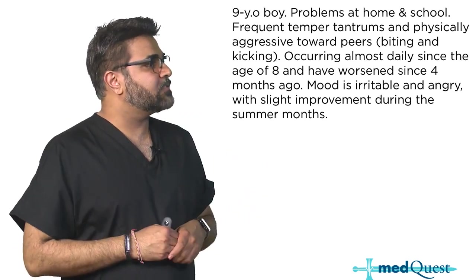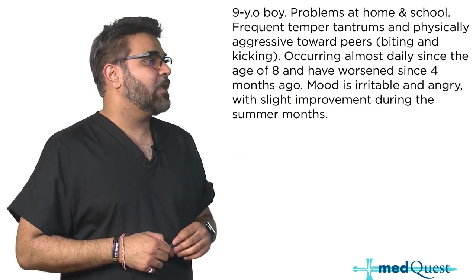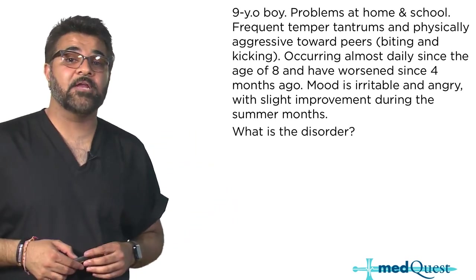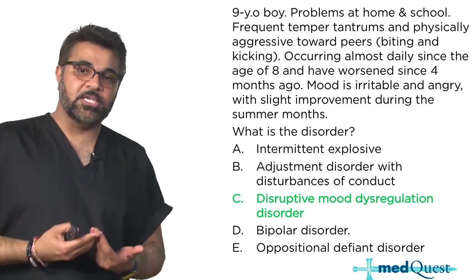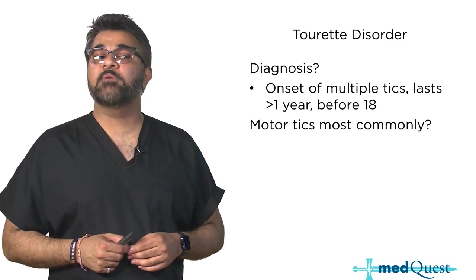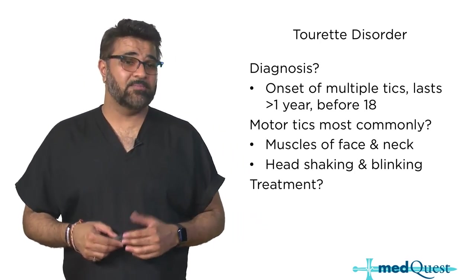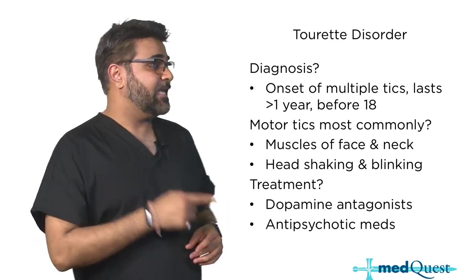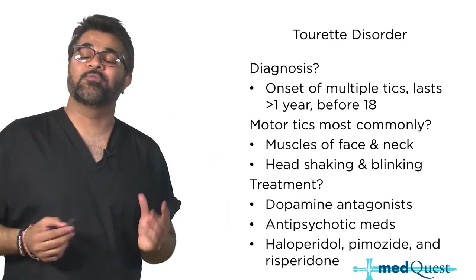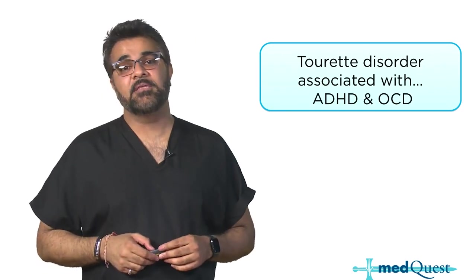A nine-year-old boy with problems at home and school, frequent temper tantrums, physically aggressive towards peers occurring almost daily since age eight, worsening since four months ago, with irritable and angry mood and slight improvements during summer months - this is a presentation of disruptive mood dysregulation disorder. For Tourette's disorder, the diagnosis is made with onset of multiple tics lasting more than a year before age 18. Motor tics are most commonly seen in the muscles of the face and neck - head shaking and blinking. Treatment is dopamine antagonists or antipsychotics such as haloperidol, pimozide, or risperidone. Remember, Tourette's is highly associated with adult onset ADHD and obsessive-compulsive disorder.